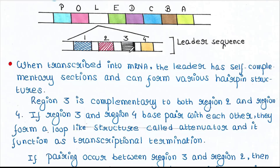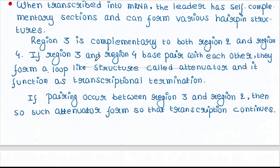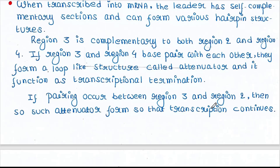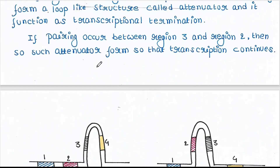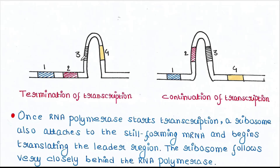When regions 3 and 4 pair, they form a loop-like structure called the attenuator, which functions as transcriptional termination. This attenuator structure helps terminate the transcription process. Now, if pairing occurs between region 3 and region 2 instead, no attenuator forms and transcription continues. So: 3-4 pairing means termination of transcription; 2-3 pairing means continuation of transcription.